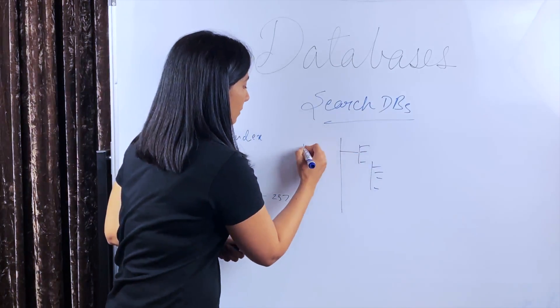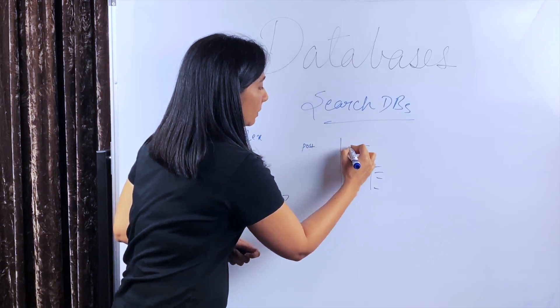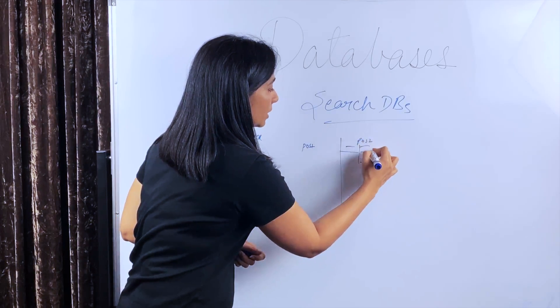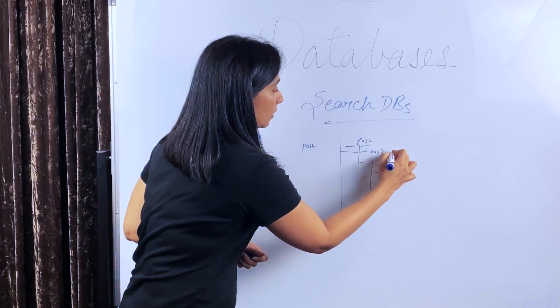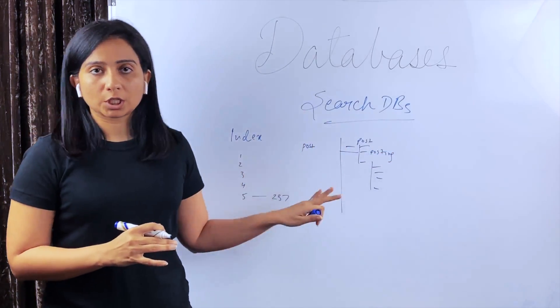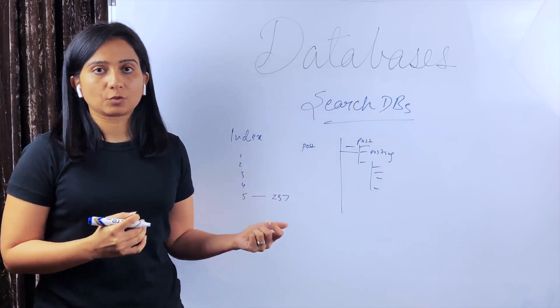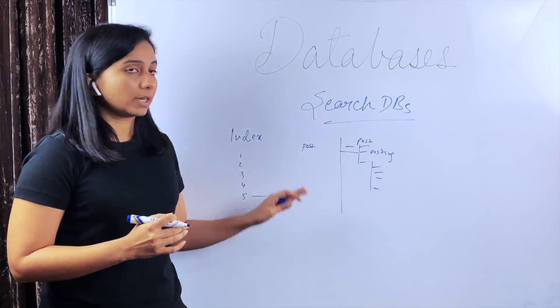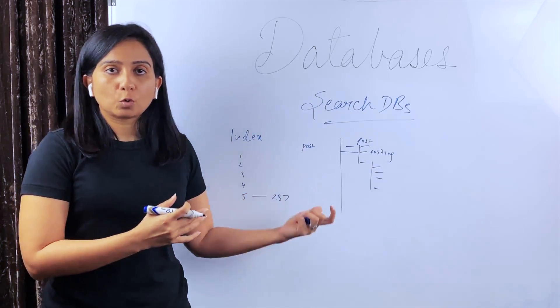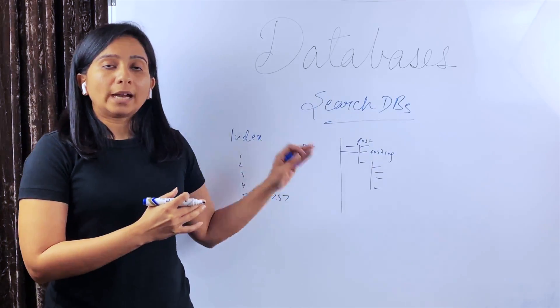Similarly, the data against those queries is stored in advanced indexes inside search databases. So when you search for a particular item, say post-it, there will be data saved in these indexes to support those search queries. Some examples of search databases are Elasticsearch, Solr, etc.